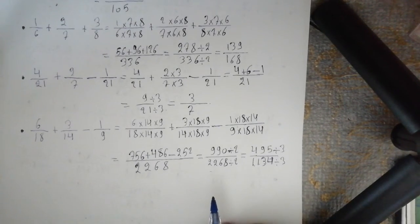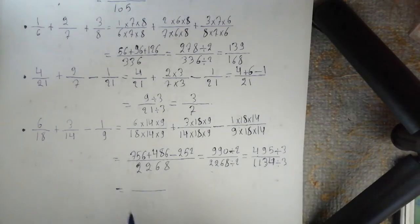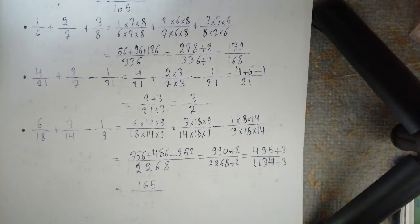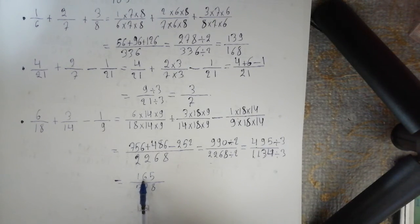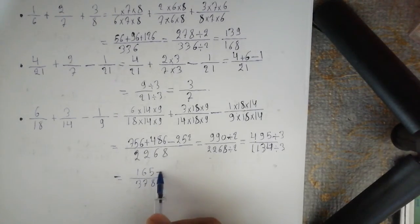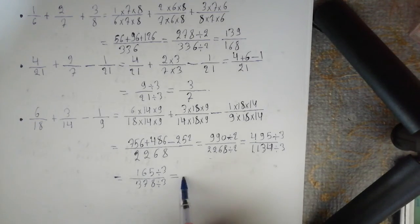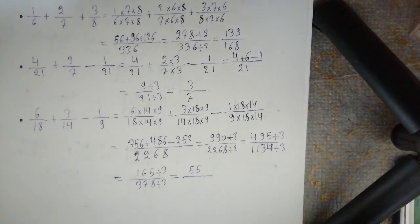We divide both components by 3. We obtain 495 divided by 3 equal to 165, and 1134 divided by 3 equal to 378. We try dividing by 3 again: 1 plus 6 plus 5 equal to 12, which is divisible by 3; and 3 plus 7 plus 8 equal to 18, also divisible by 3. So the common divisor between numerator and denominator is again 3. We obtain 165 divided by 3 equal to 55, and 378 divided by 3 equal to 126. The final simplified answer is 55 over 126.